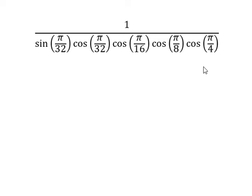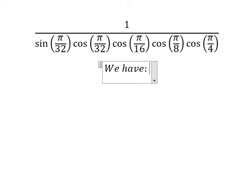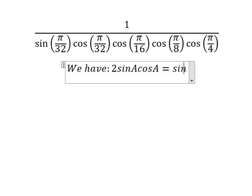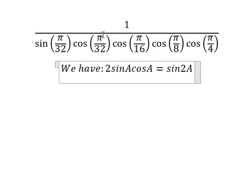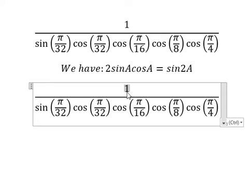Now I will show you how to answer. We have the formula: 2 sine A cosine A equals sine 2A. I will put the number 2 on both the numerator and denominator.